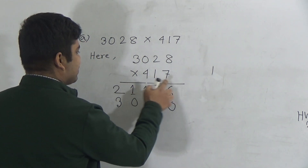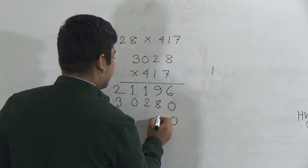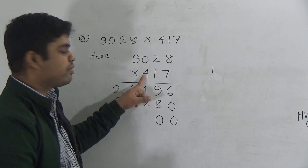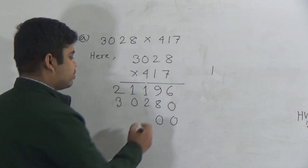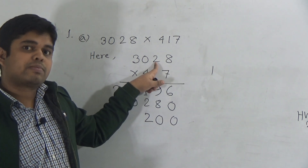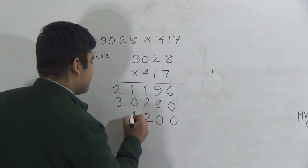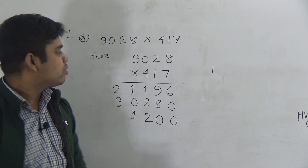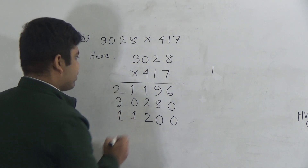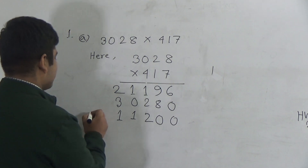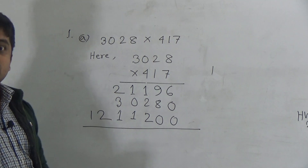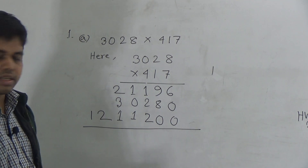Ones place and tens place are both done, so I write a zero placeholder. Now we multiply 3028 by 4. 4 eights are 32 — carry 3. 4 twos are 8, plus 3 is 11 — write 1, carry 1. 4 zeros are 0, plus 1 is 1. Now I multiply 3 by 4 — 4 threes are 12.